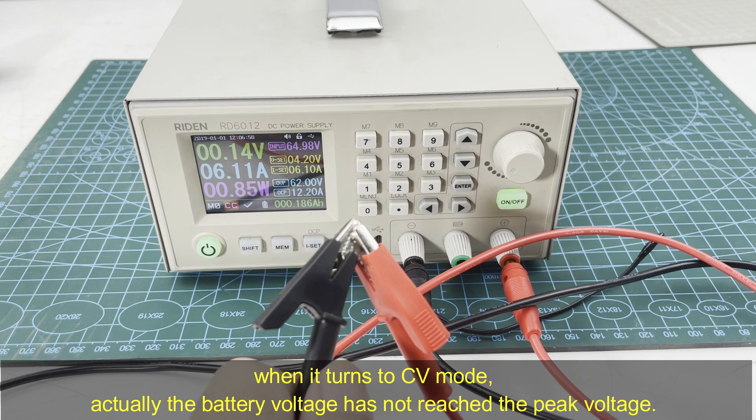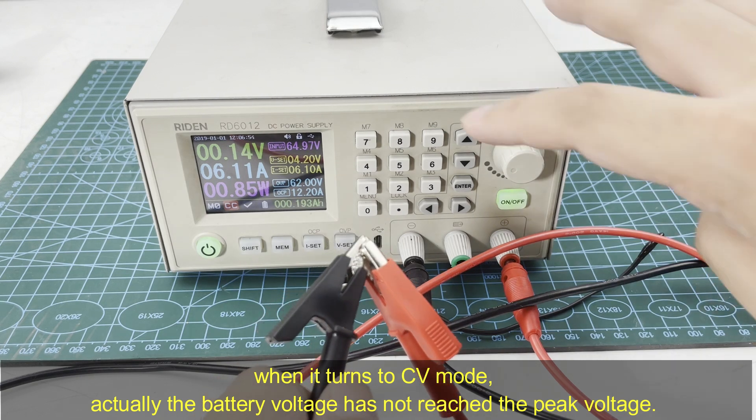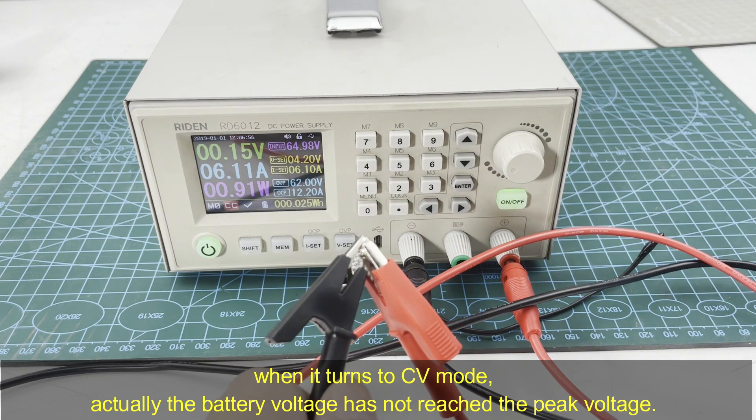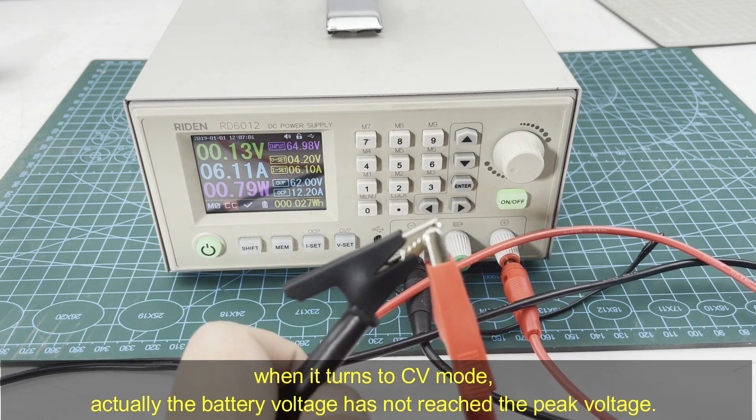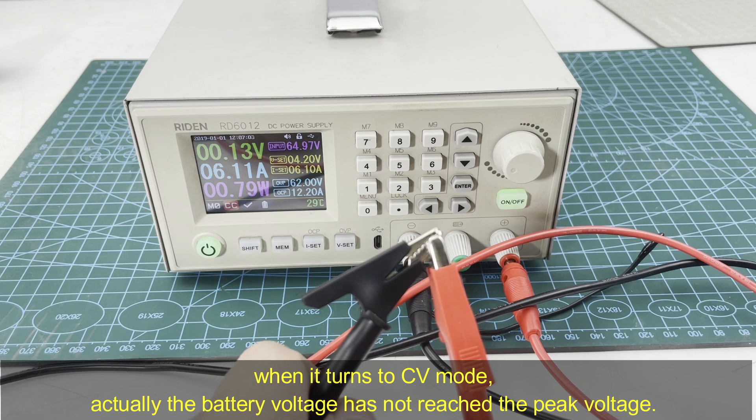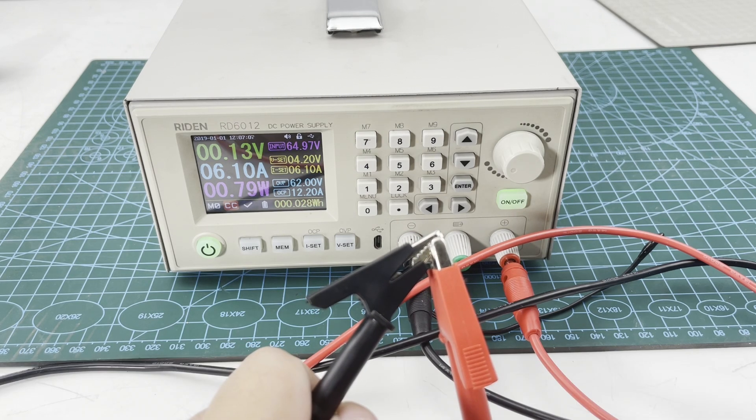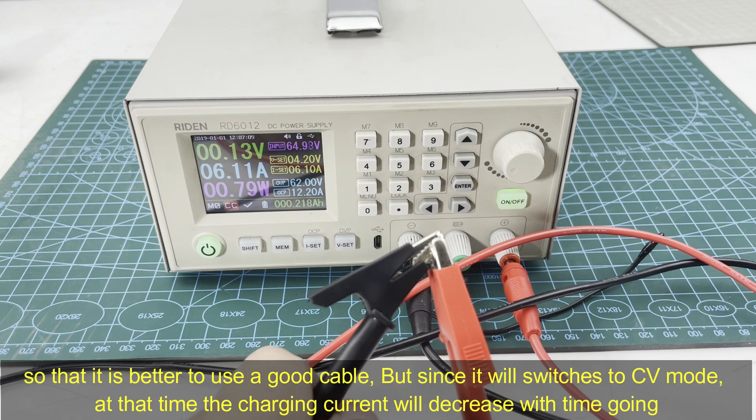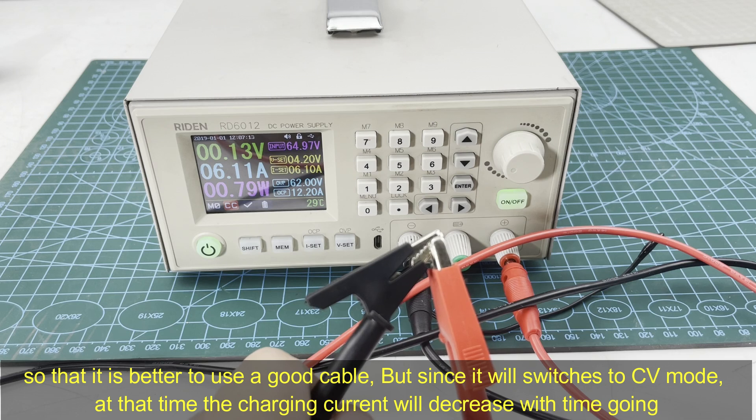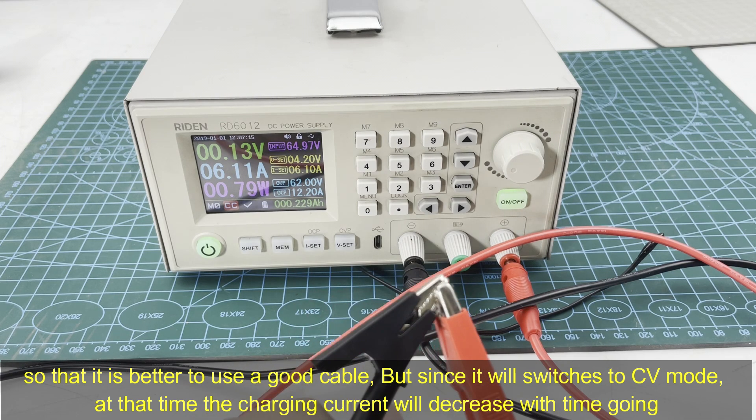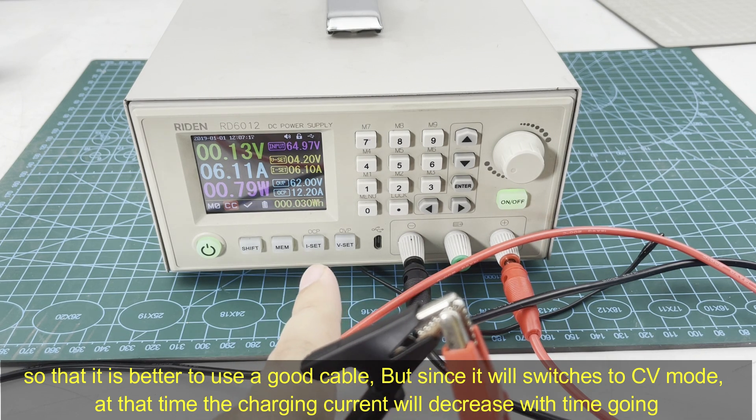When it turns to CV mode, for example it reaches 4.2 volts here to charge the battery and it turns to CV mode, actually the battery voltage has not reached the peak voltage, so you need to use a good cable to charge the battery.